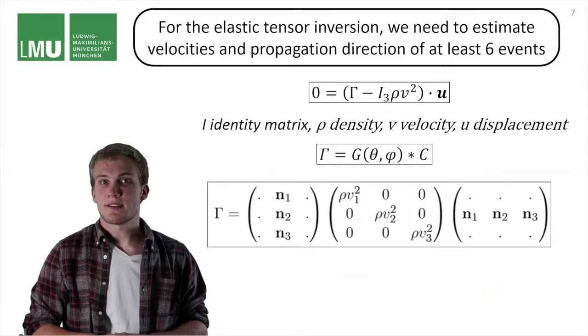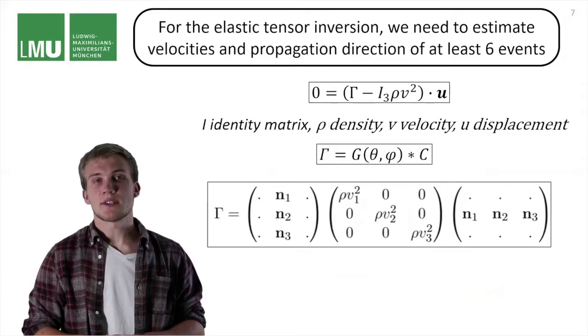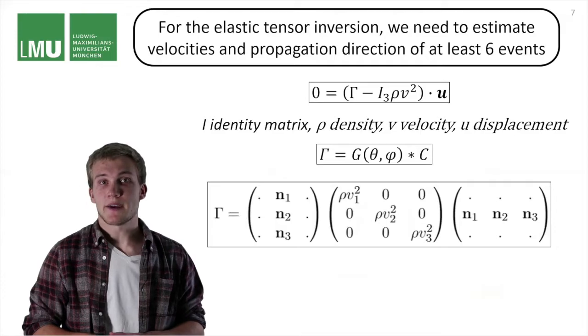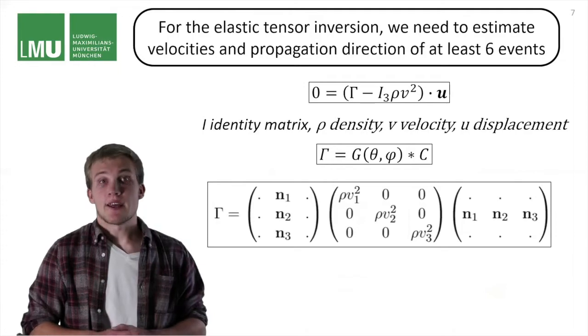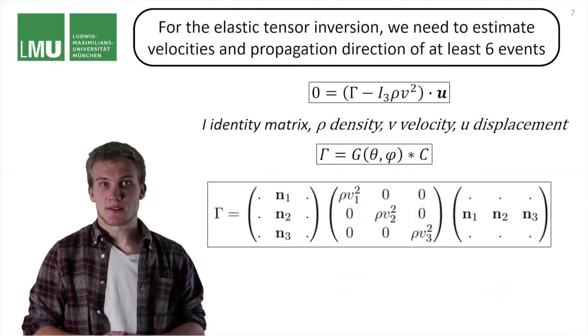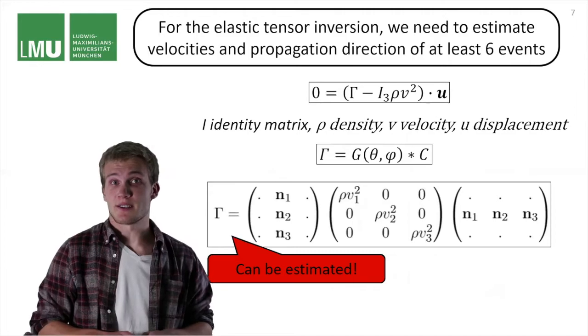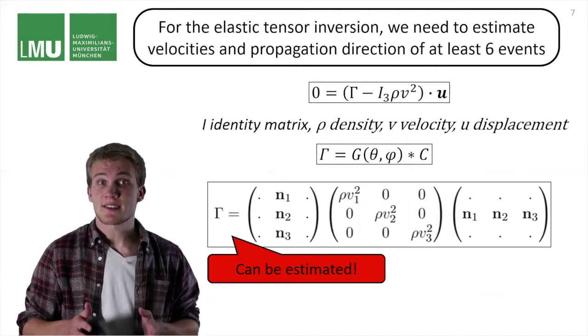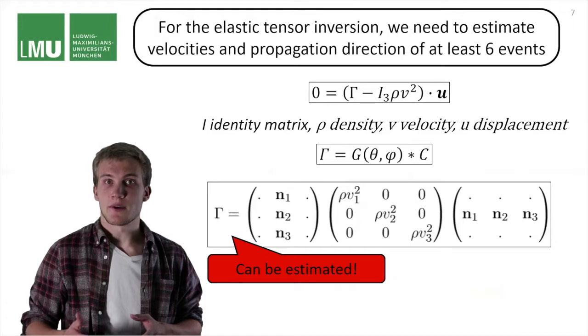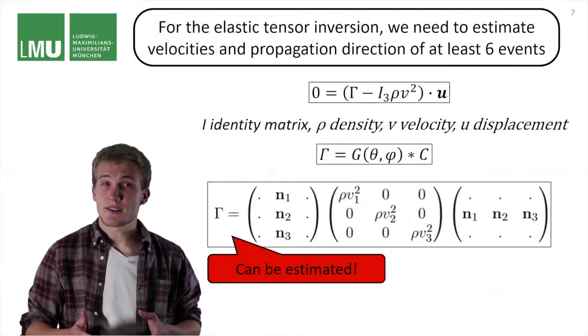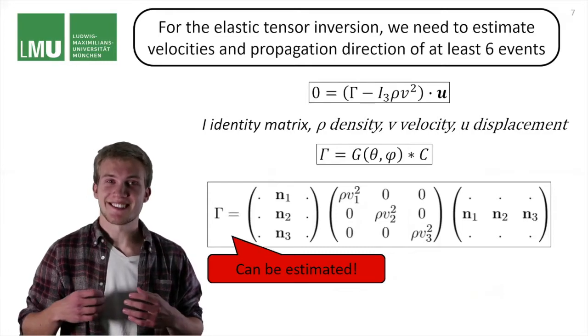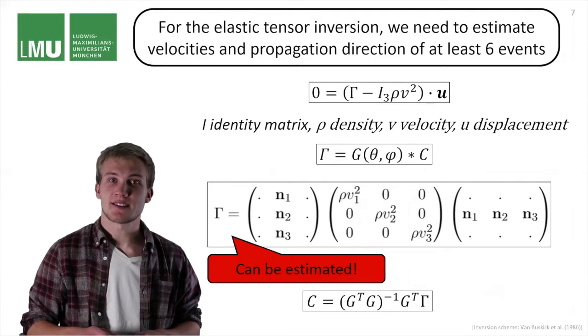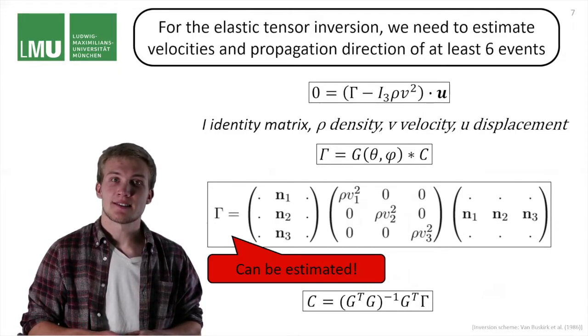Now if you look at this Kelvin-Christoffel matrix and assuming that we know the density, we could try to estimate the velocities and we can measure the polarizations. Then we can reconstruct the Kelvin-Christoffel matrix. Looking at the previous equation again, the Kelvin-Christoffel matrix is connected to the elastic tensor with this forward operator G. Now if we also know the propagation direction, we could reconstruct G and then we can set up the normal equations that minimize the least square error such that we find a formulation for the elastic tensor.